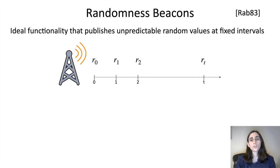I want to start by recalling the notion of a randomness beacon. This was introduced by Robin in the 80s as an ideal service that publishes unpredictable random values at fixed intervals of time.